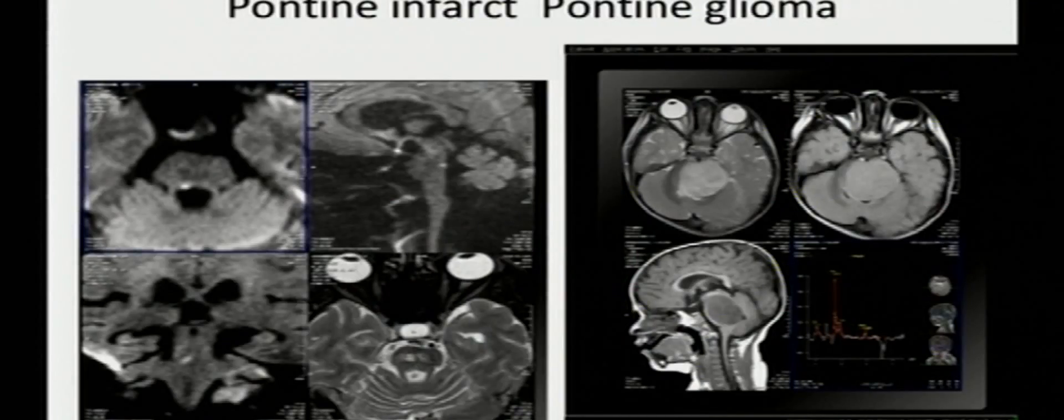You can see pontine infarct can cause sixth nerve palsy. This is the pontine infarct and pontine glioma also can end up in sixth nerve palsy. Any sixth nerve palsy, even with underlying systemic illness, better to image.